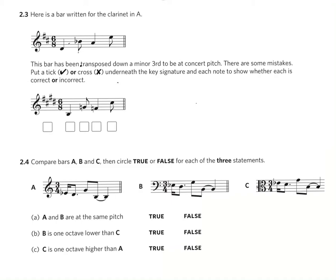In the first question we are given a written bar of music for the clarinet in A. The bar has been transposed down a minor third to be at concert pitch, but there are some mistakes. You're asked to put a tick or a cross underneath the key signature and each note to show whether each is correct or incorrect.